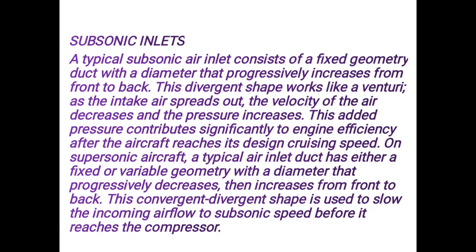After the aircraft reaches its design cruising speed, a typical supersonic air inlet duct has either a fixed or variable geometry with a diameter that progressively decreases then increases from front to back. This convergent-divergent shape is used to slow the incoming airflow to subsonic speed before it reaches the compressor. This is very important for supersonic flight, in which the velocity of the incoming air can be reduced to subsonic to maintain stability.